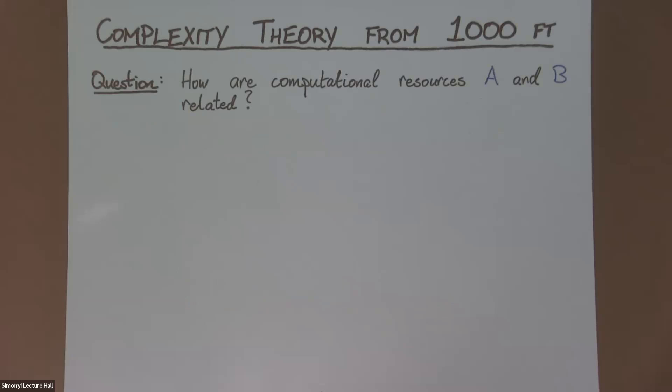how do these resources compare to one another? So for example, if I can solve a problem quickly, can I solve it using a small amount of memory? How do sequential and parallel computation compare? How do deterministic and randomized computation compare?